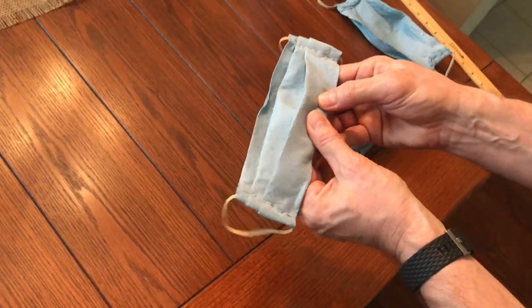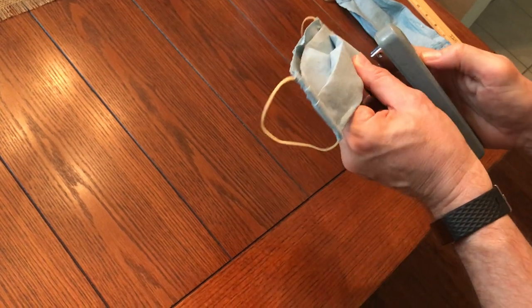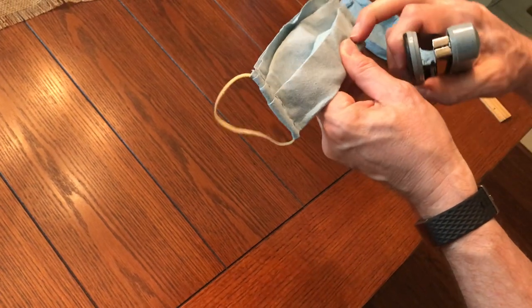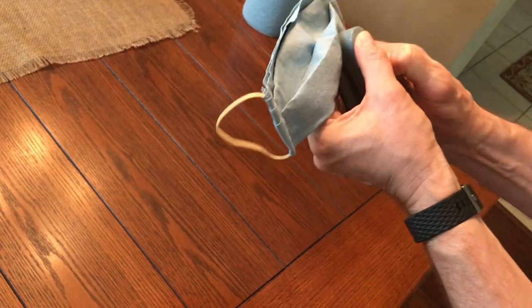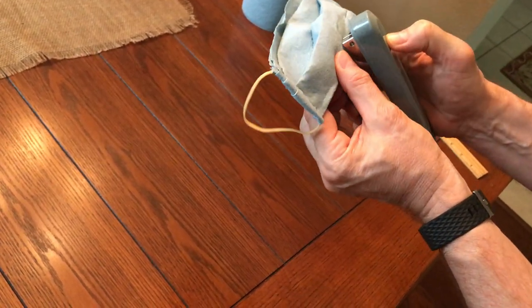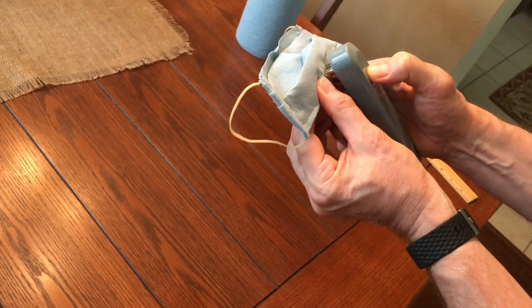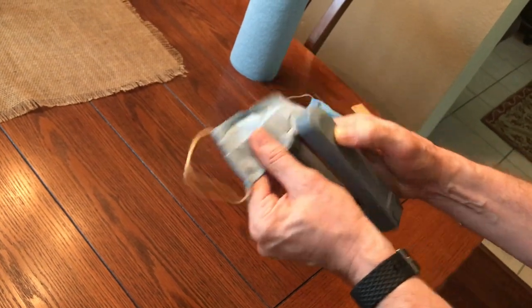Alright, I'm going to put in a staple just through the first pleat, and it goes over the top of the pipe cleaner. One at that end, one at this end.